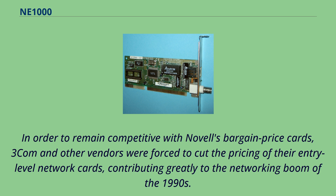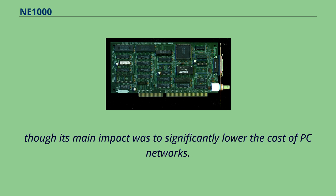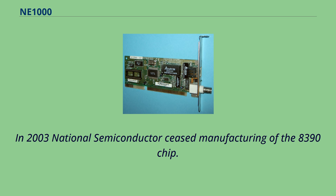In order to remain competitive with Novell's bargain price cards, 3Com and other vendors were forced to cut the pricing of their entry-level network cards, contributing greatly to the networking boom of the 1990s. To a lesser extent, it is arguable that the success of the NE-1000/NE-2000 cards helped to tip the scale of the LAN wars in favor of Ethernet over Token Ring, though its main impact was to significantly lower the cost of PC networks. In 2003, National Semiconductor ceased manufacturing of the 8390 chip.